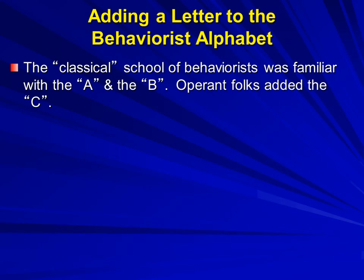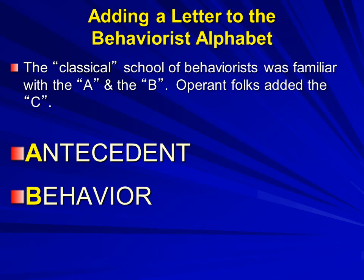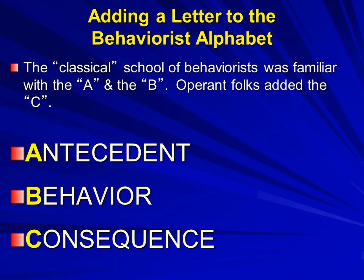Now, to the modern behaviorist, every behavior has an antecedent and a consequence. If there are multiple stimuli previous to the behavior, the one immediately before the behavior is the one known as the antecedent. And we can modify behaviors — the B — by manipulating what comes before, the A or the antecedent, and what comes after, the C or the consequences.